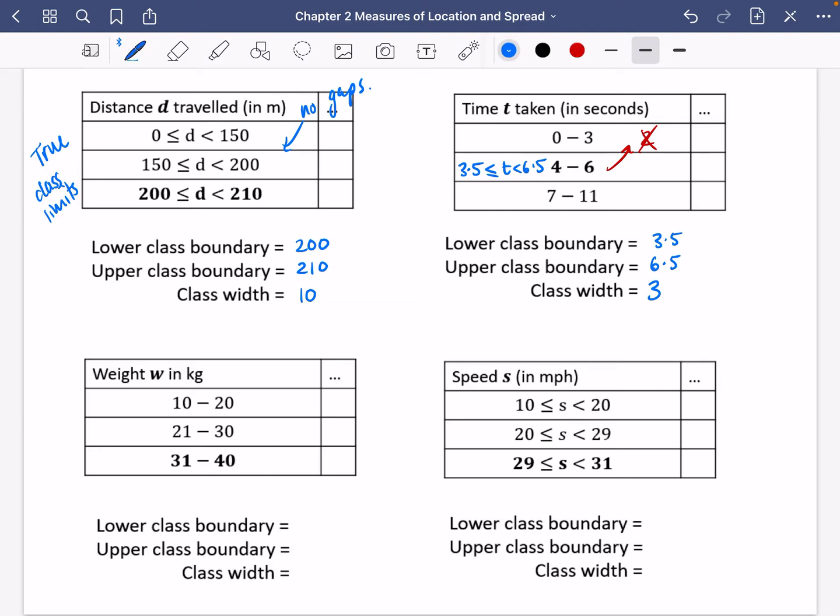So this one here is actually going to be not in its true class limits. There are some gaps inside here, so we're going to have to adjust them. I think that means it's going to be 30.5 all the way up to 40.5. So the lower class boundary is 30.5. The upper is 40.5. And when you subtract those, the class width is 10. Most people would say the class width is 9. But in reality, the true class width is 10.